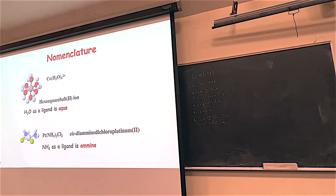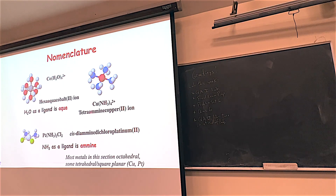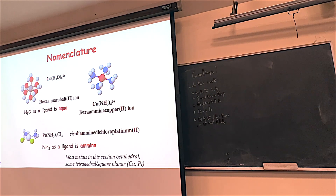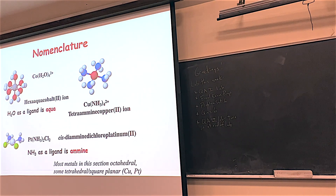Here's another one. This is four ammonias — a tetraamine. It's a copper(2+), so we would call this tetraaminocopper(2). This would be an ion. Most of the metals in these sections are octahedral. We're learning about complex ions and compounds. If it had a positive or negative charge you put ion in there. Most of the things we're going to look at are tetrahedral or square planar, though there are a lot of octahedral ones as well.